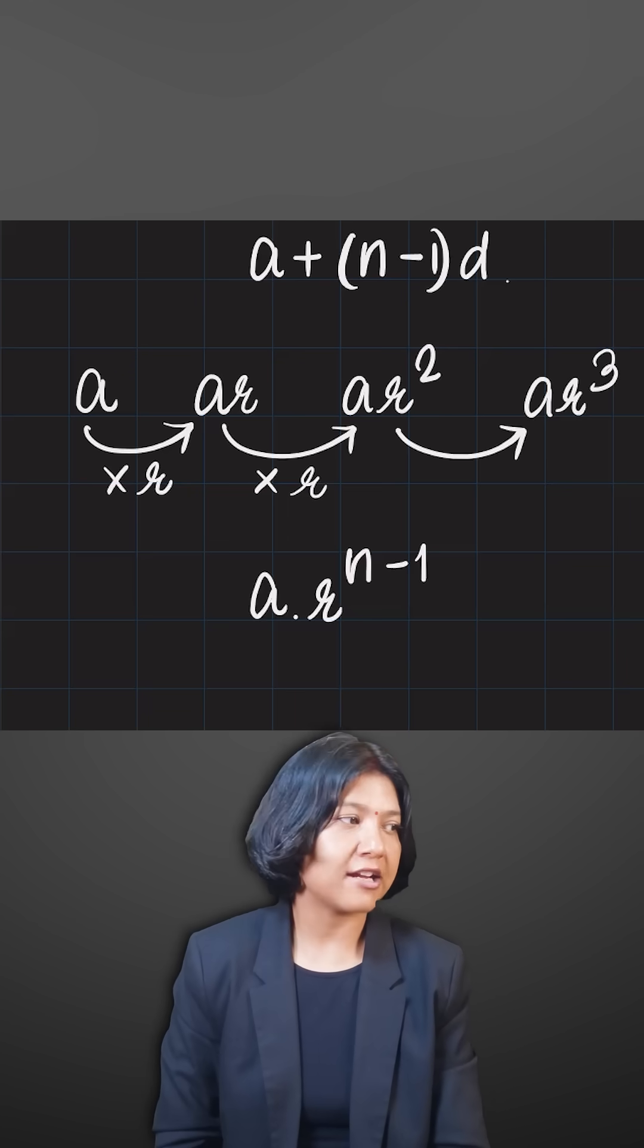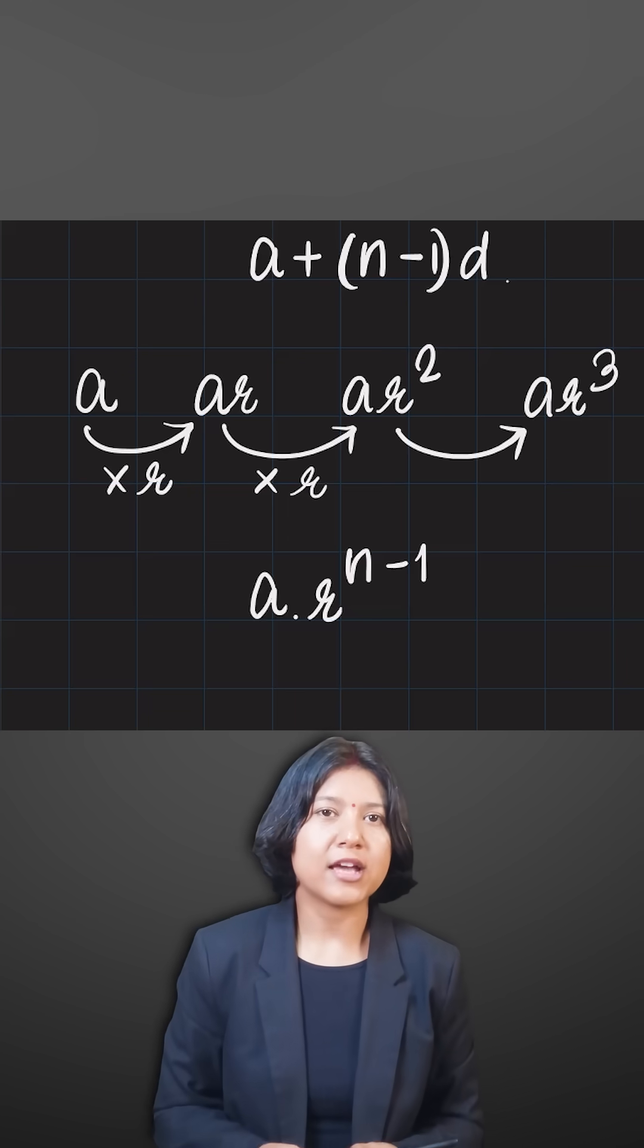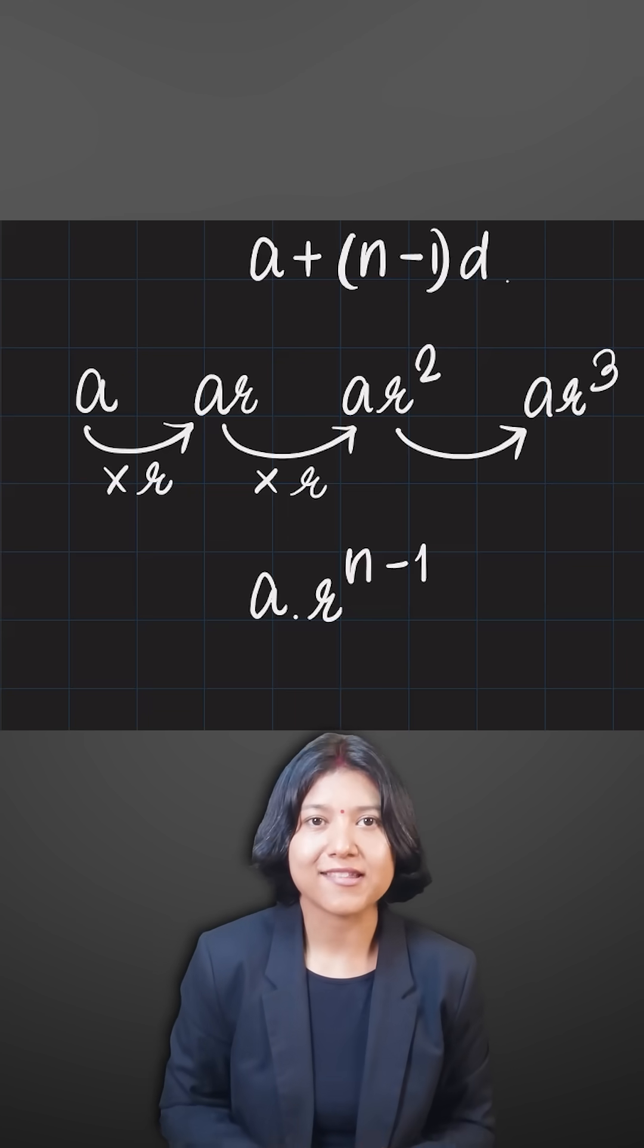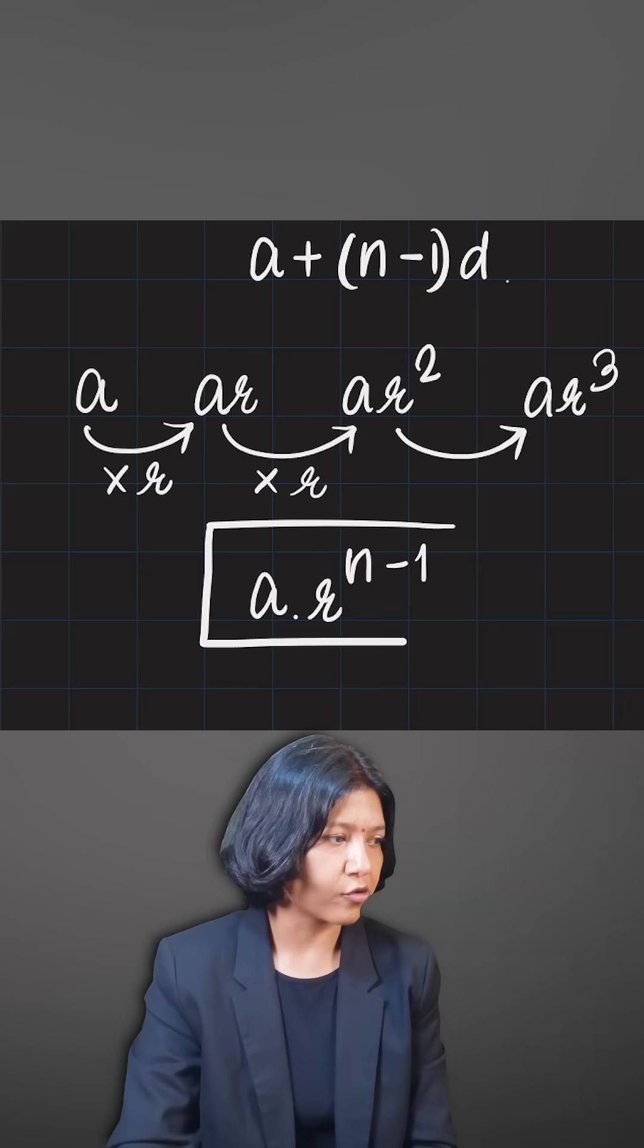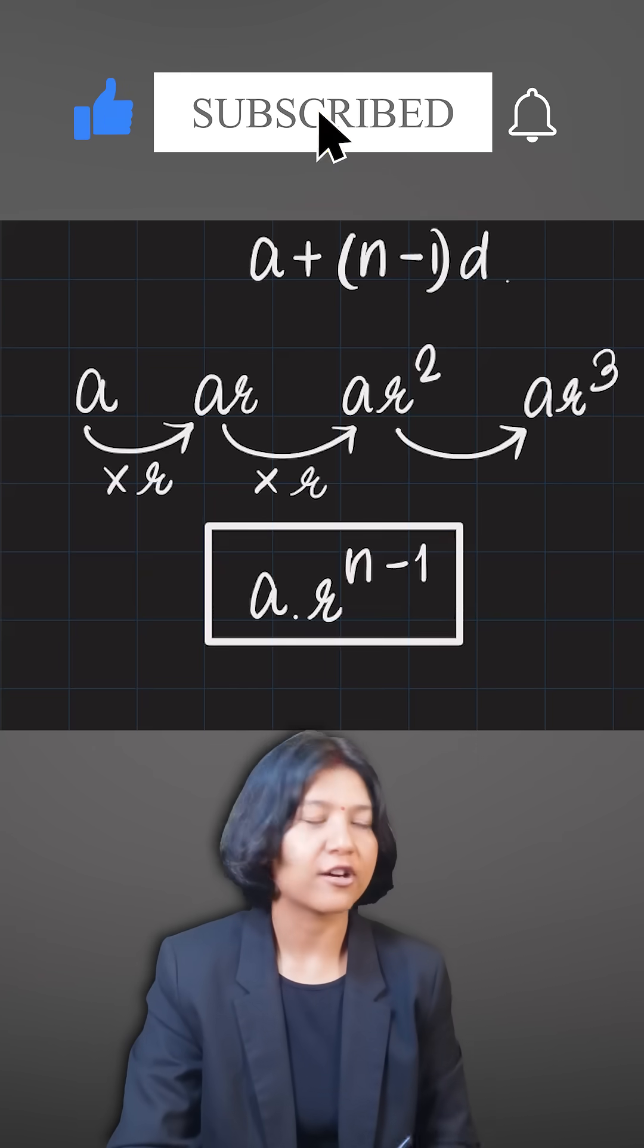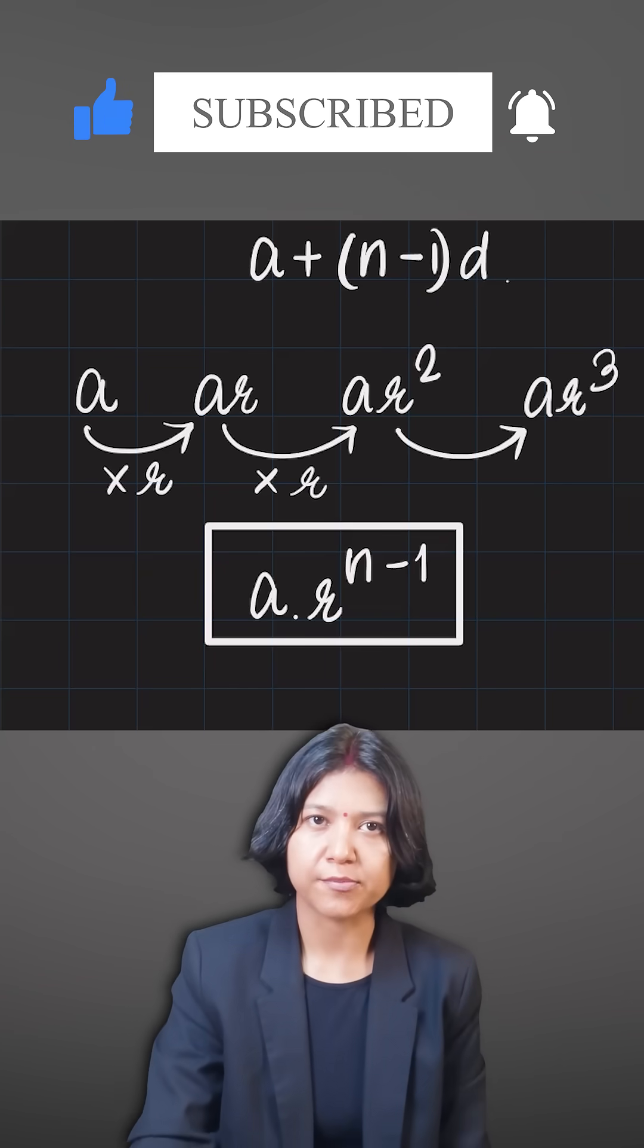The first term has zero r, and to reach any nth term we have to multiply r for one less than its position. This is called the general rule or the general formula for any term of a geometric progression.